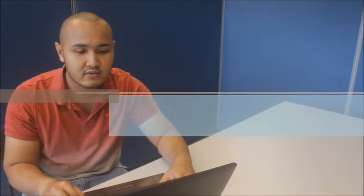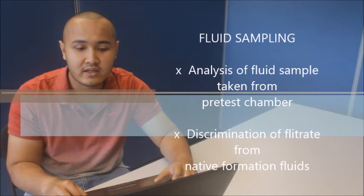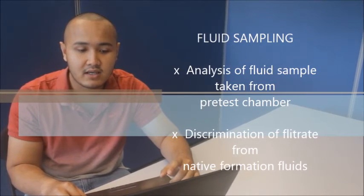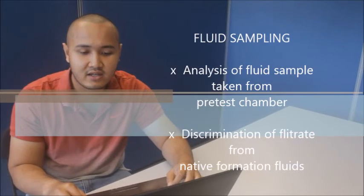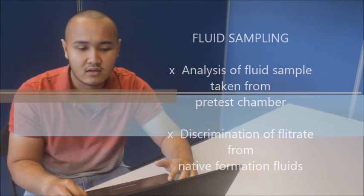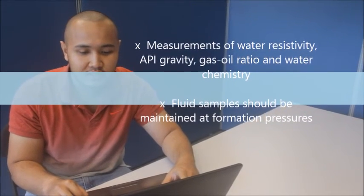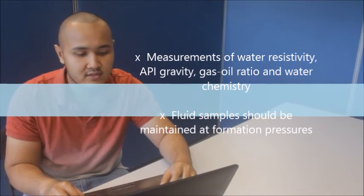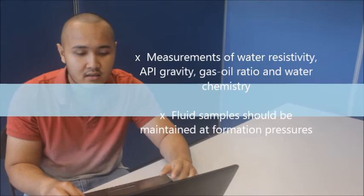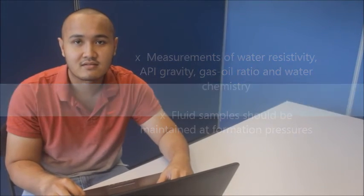Actual formation pressure can be taken when the pressure becomes stable, or estimated from the buildup characteristic when the tool is retracted before pressure stabilization. Regarding fluid sampling, samples of formation fluid can be taken for analysis when the fluid fills the pre-test chamber up to 10 gallons or more. Proper analysis involves discriminating the filtrate from the invaded zone from the native formation fluids. Measurements of water resistivity, API gravity, gas-to-oil ratio, and water chemistry can then be performed. The formation fluid samples should be maintained at formation pressure.